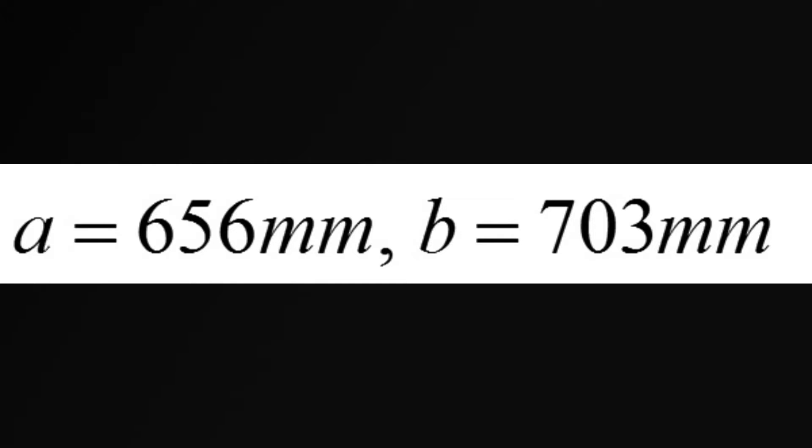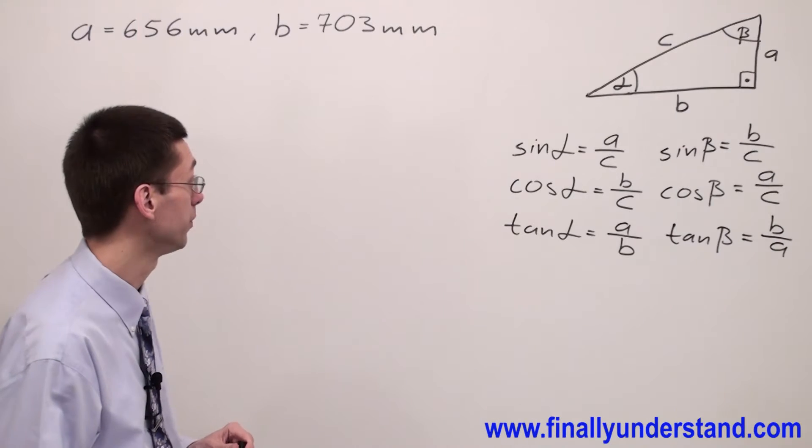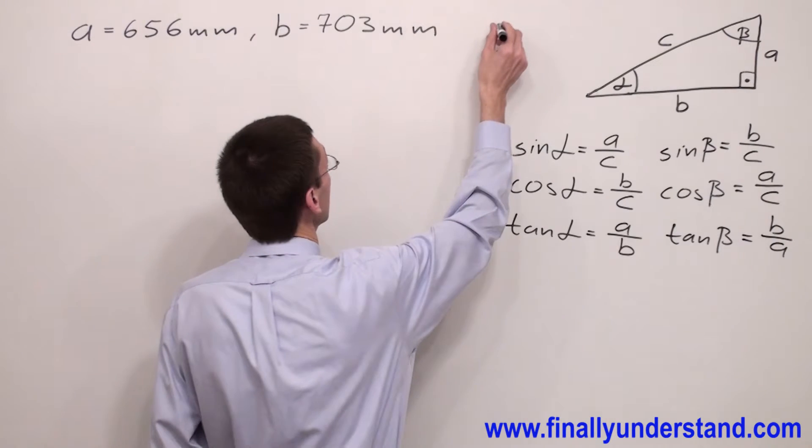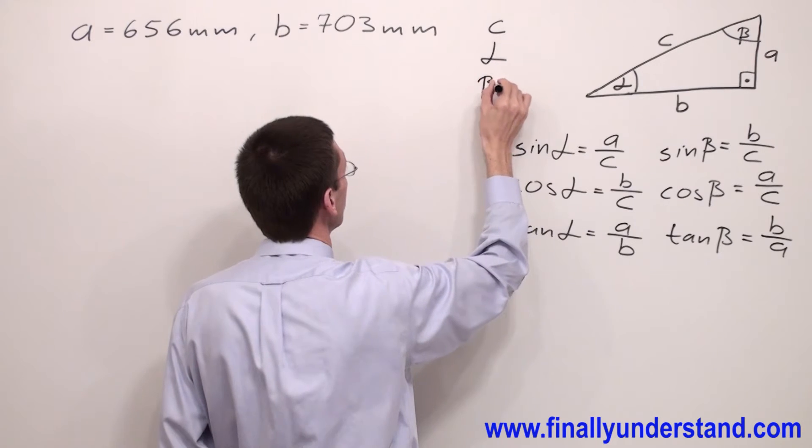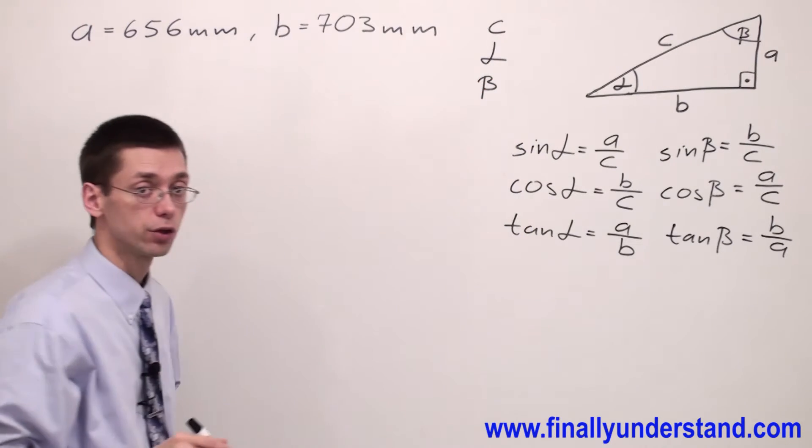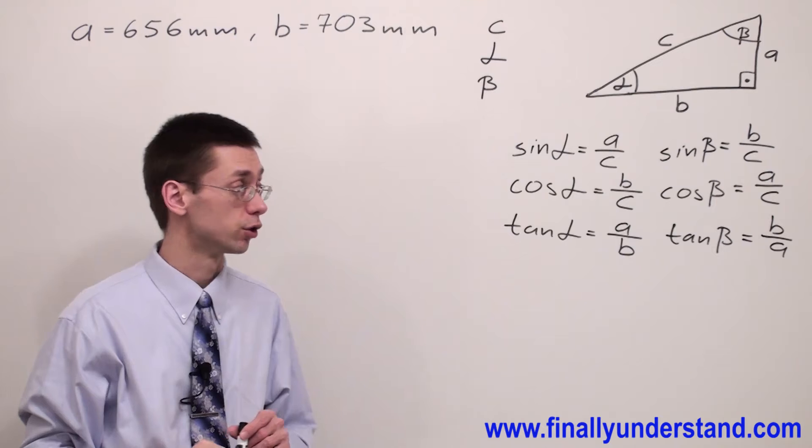We have another example on the board. This time we're supposed to find the length of side c and we're supposed to find angle alpha and angle beta because we have given two lengths.